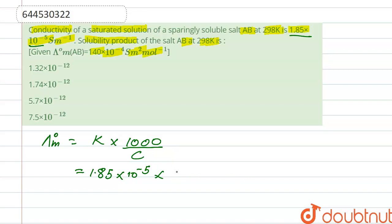...1000 upon C, where the value of molar conductivity is given, that is 140 × 10^-4. But here as the units are in meter, so we write like this: 140 × 10^-4 = 1.85 × 10^-5 × 1/1000C.